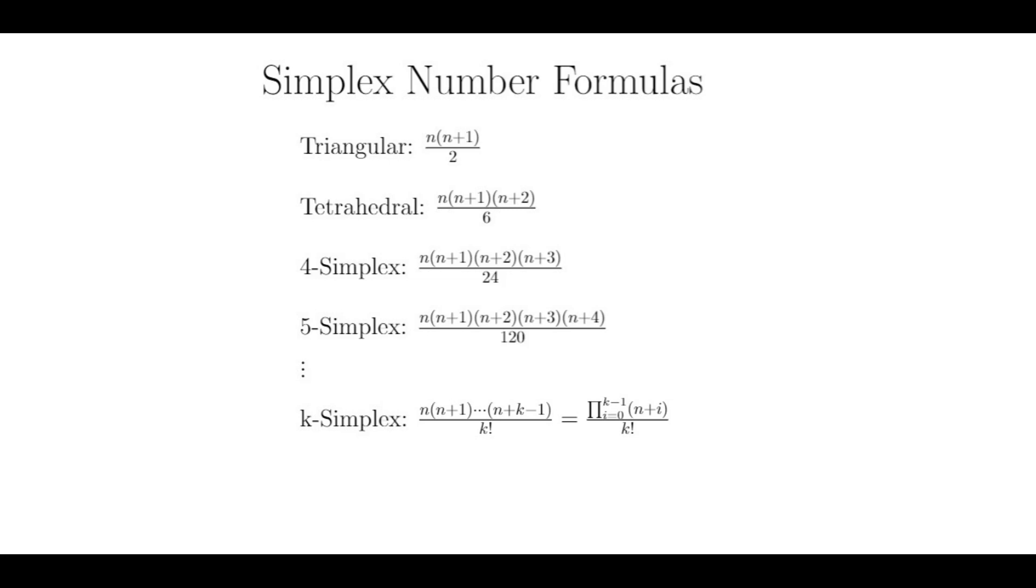Now we've already seen formulas for the k-simplex numbers when k is equal to two and three, but there are corresponding formulas for all k. But they basically all follow the same pattern. To calculate the nth k-plus-one-simplex number, you add the first of the nth k-simplex numbers together.